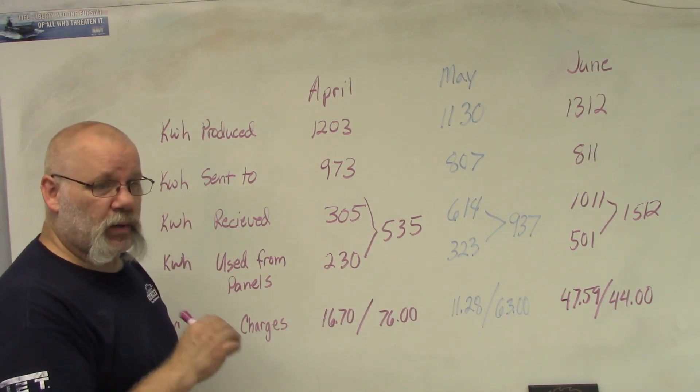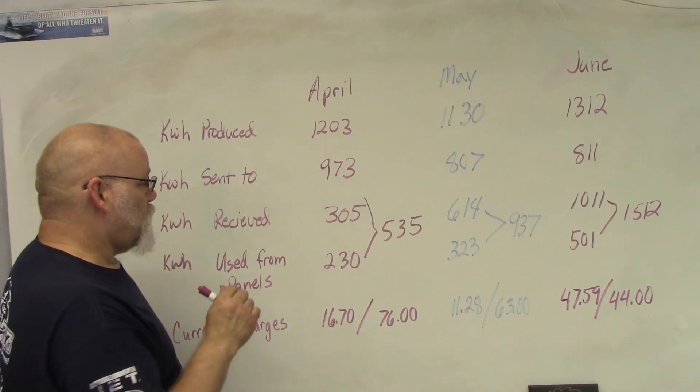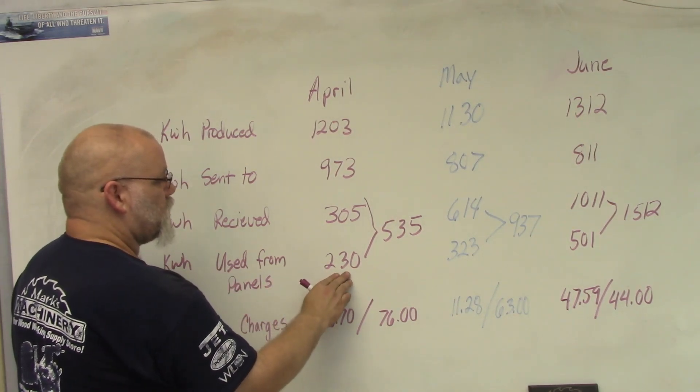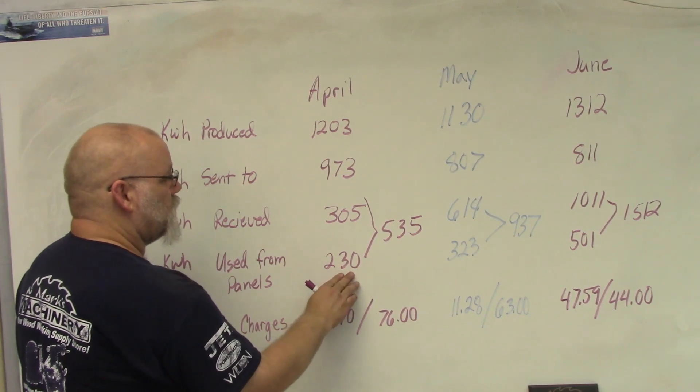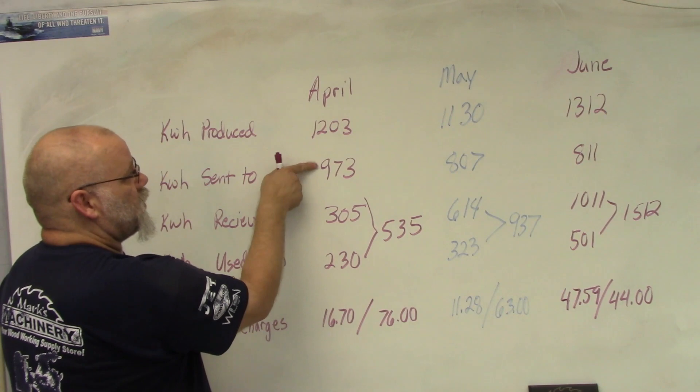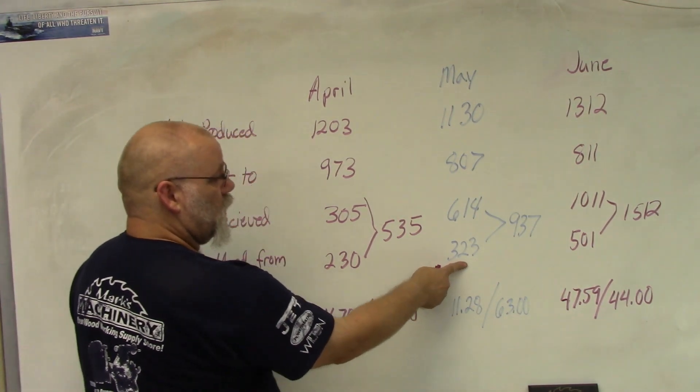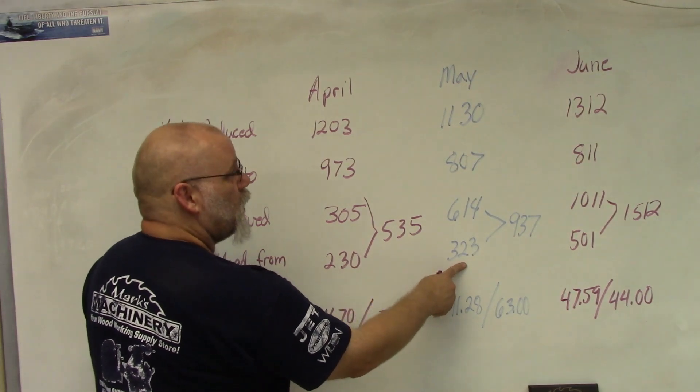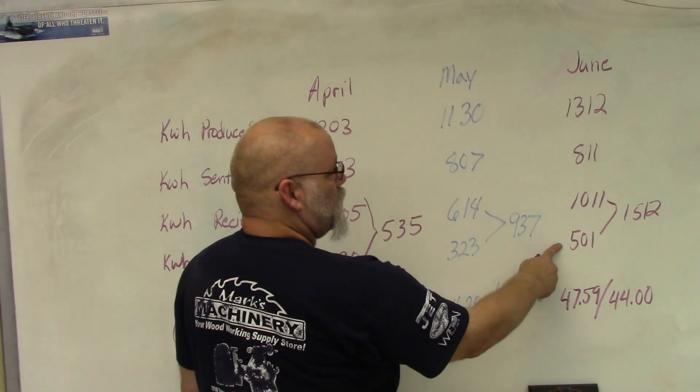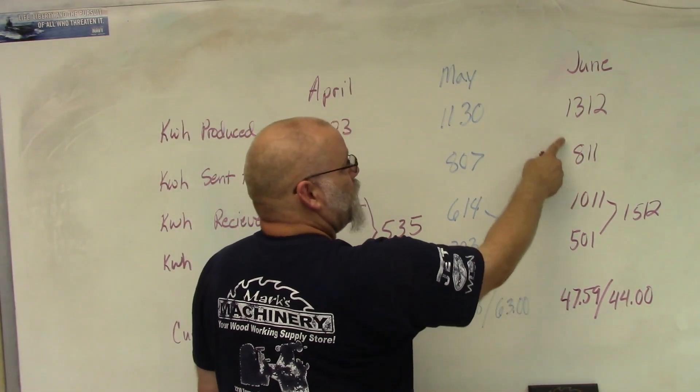During the daytime, this is when we use directly from the solar panels. We drew 230 kilowatt hours from the panels before we sent it to the electric company. If you take this number and this number it equals this number. In May we used 323, and plus that would give us our 1,130. In June we used 501 plus our 811 would give us 1,312.